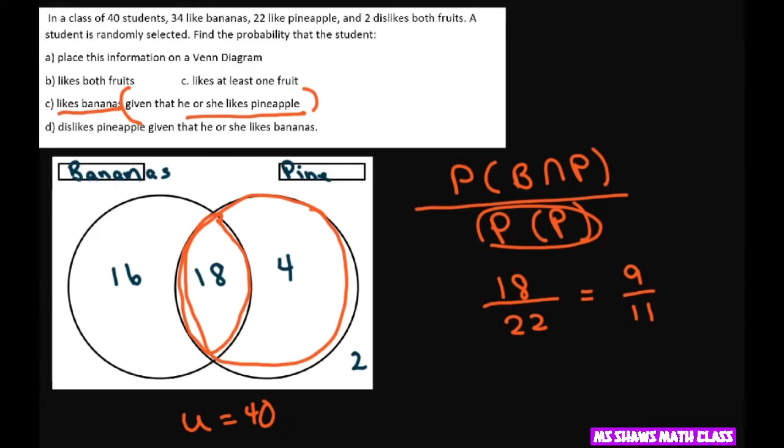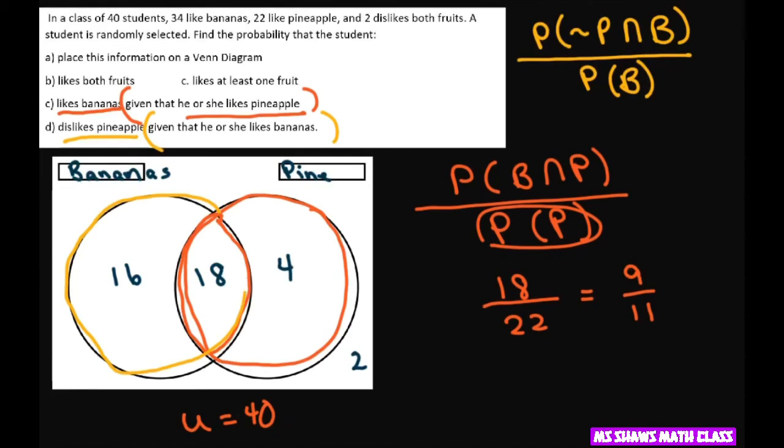And lastly, probability of not pineapples and bananas given that he or she likes bananas. So total bananas is here. And what does that equal? That's going to be 34.